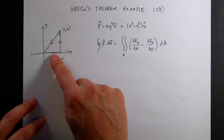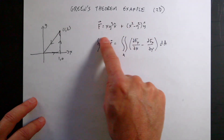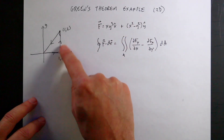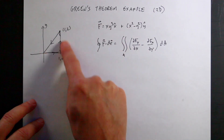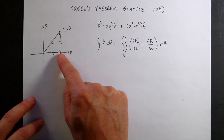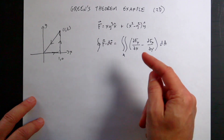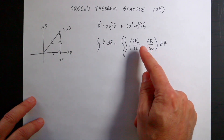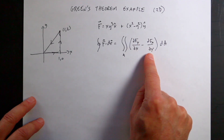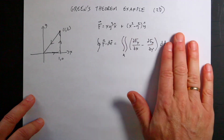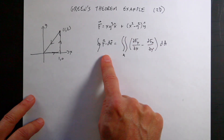If I integrate the path integral F·dr — thinking of this in terms of physics, this would be the work done around some loop; it's not conservative — then I can relate that to the partial derivatives of that force: the partial of Fy with respect to x minus the partial of Fx with respect to y, and then integrate the area of that function. Those two things should be the same. That's what Green's Theorem says.